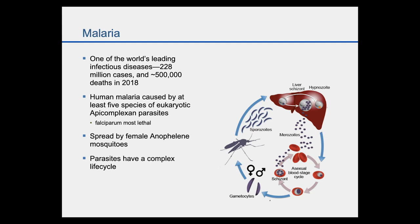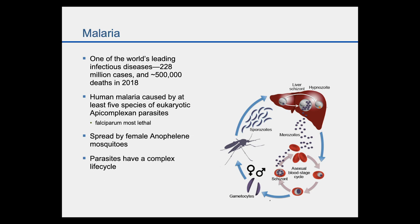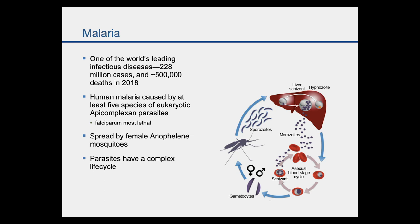This is where you get all the symptoms of malaria — the characteristic fever and chills. In response to cues we don't entirely understand, some parasites will differentiate into male and female gametocytes. These are the only forms that can survive in the midgut of a mosquito. When a mosquito takes a blood meal, the gametocytes differentiate into gametes, they mate, there is a brief meiosis, and the resulting parasites migrate out of the midgut, set up an oocyst on the midgut wall, and eventually migrate to the salivary glands where they can start the infection again.